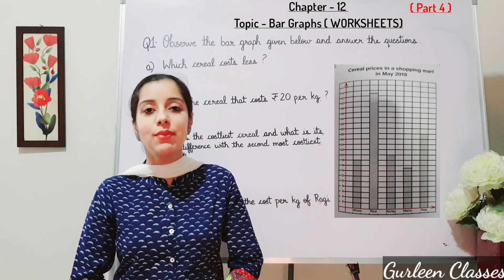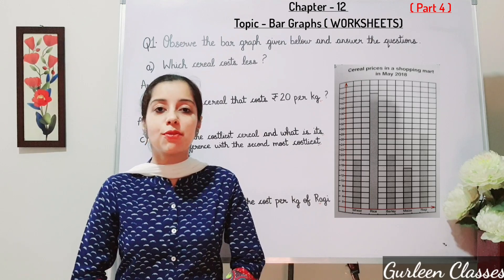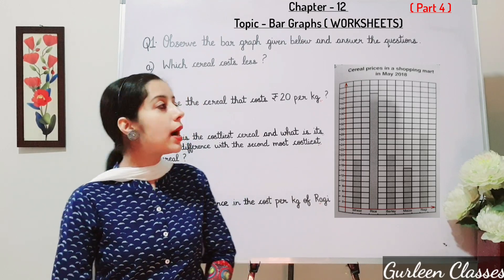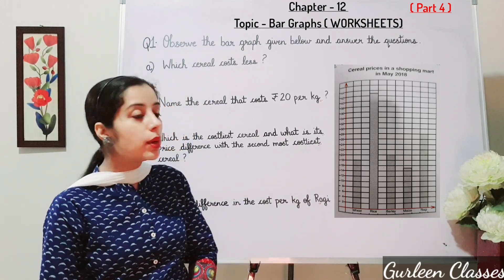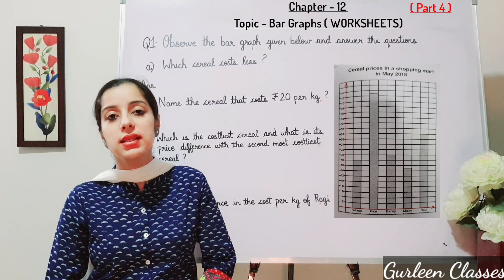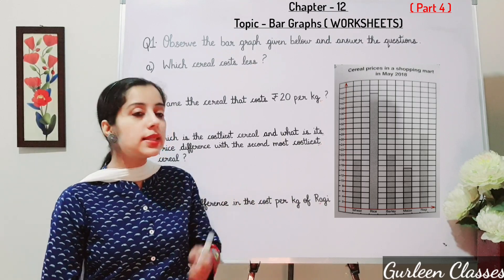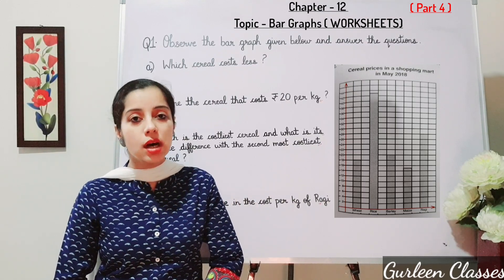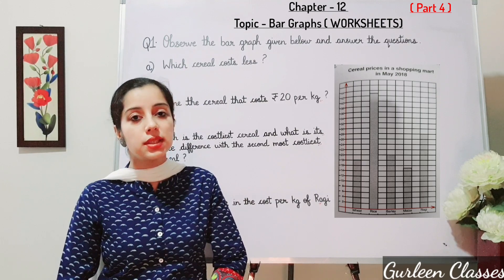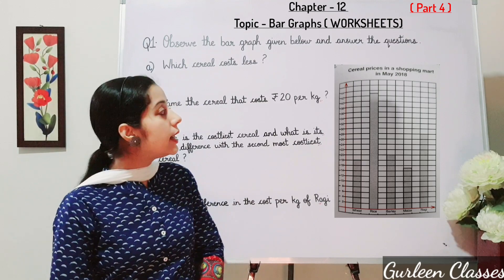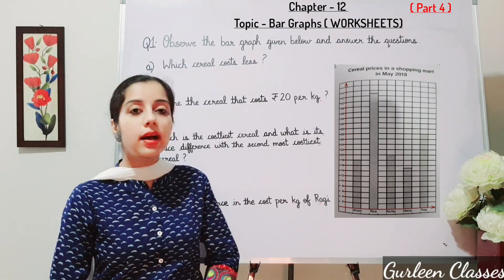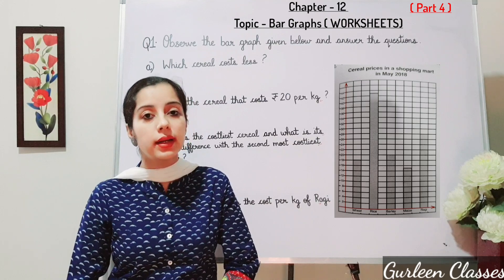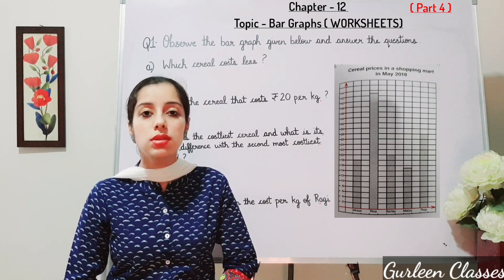Let us start with worksheets of bar graph. Question number 1: observe the bar graph given below and answer the questions. So here you can see the bar graph. On the basis of this, we have to answer the questions. The title of the bar graph is 'Cereal Production in the Shopping Mart in May 2018.'